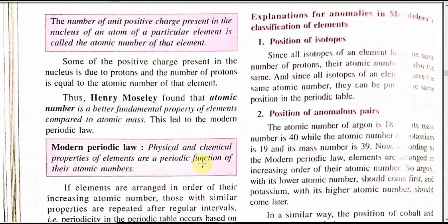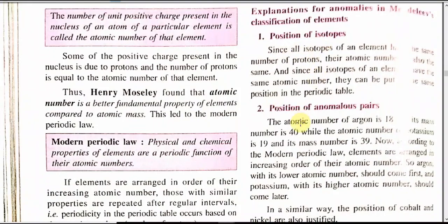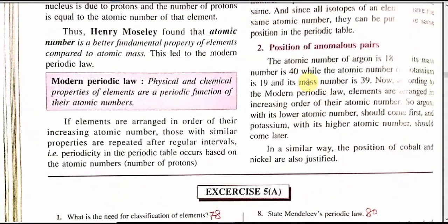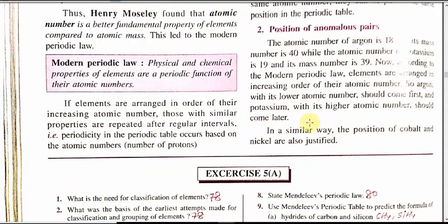The Modern Periodic Law given by Henry Moseley: physical and chemical properties of elements are periodic functions of their atomic number. If elements are arranged in order of their increasing atomic number, those with similar properties are repeated after regular intervals — periodicity of elements is based on atomic number. This also explains the anomalies: since all isotopes have the same atomic number, they can be placed together. For the anomalous pair, argon has atomic number 18 and potassium has atomic number 19, so argon is placed before potassium by atomic number. Similarly, the positions of cobalt and nickel are justified. Henry Moseley eradicated many controversies produced by Mendeleev.